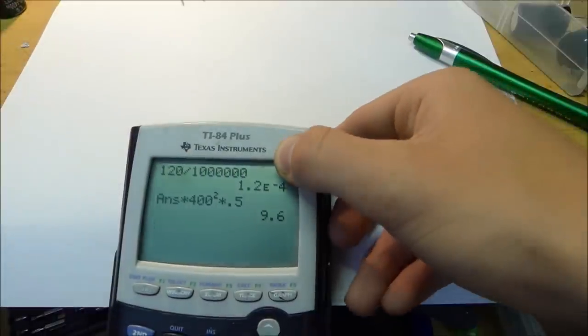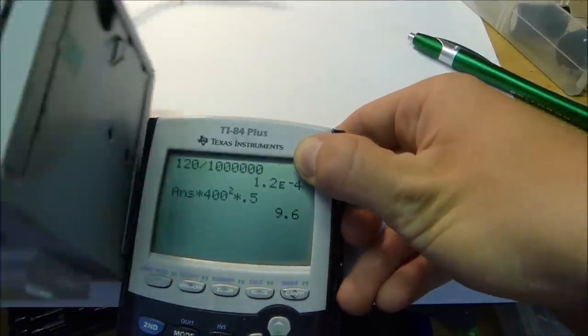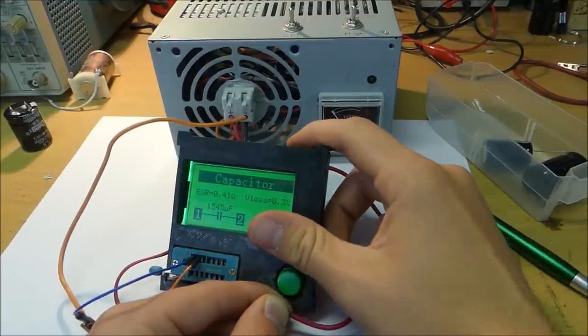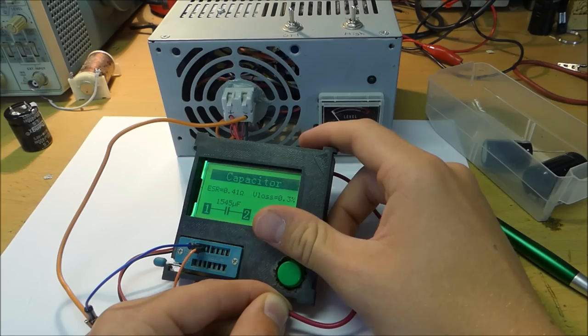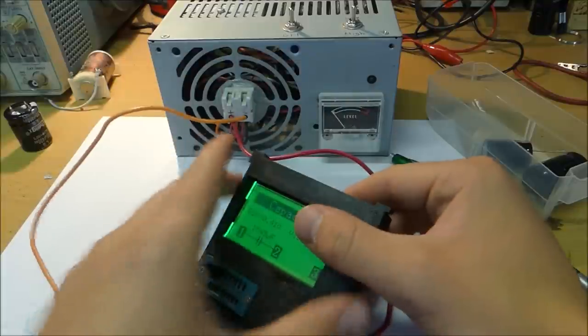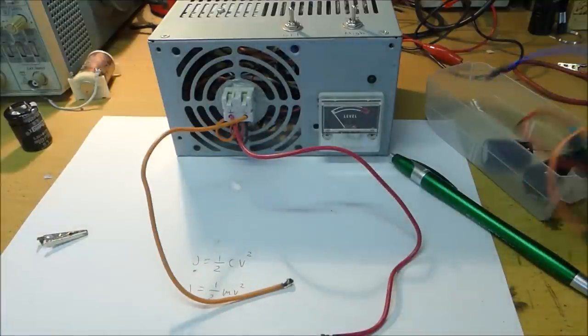Now, this is a very small capacitor, so let's see how much energy a larger capacitor bank can hold. As you can see, in this capacitor bank, it has a total capacitance of approximately 1545 microfarads, and this thing can be charged up to a voltage of approximately 400 volts.